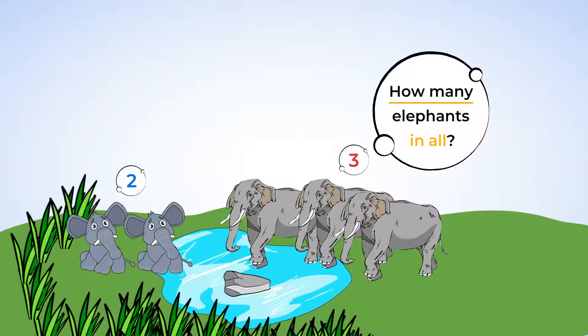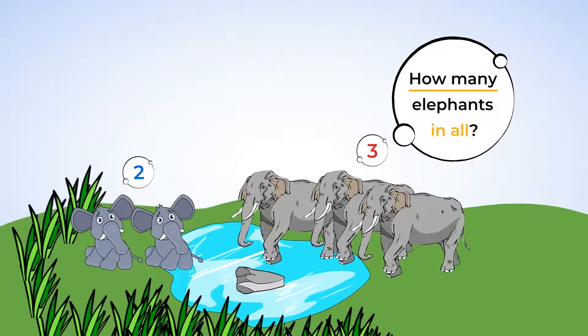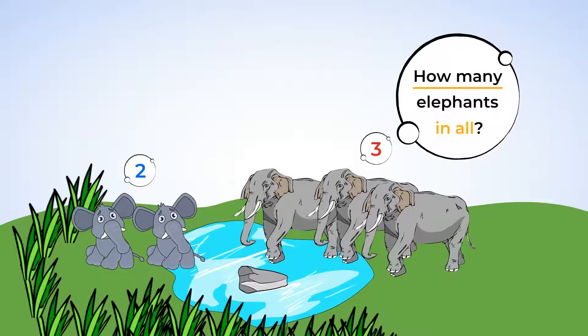This is a word problem. We can use our brains to figure out how to solve it. Let's take a closer look at it. It says we have three adult elephants and two baby elephants. So, three and two. Let's write that down. Okay, now what do we do with these numbers? Do we add or subtract them?